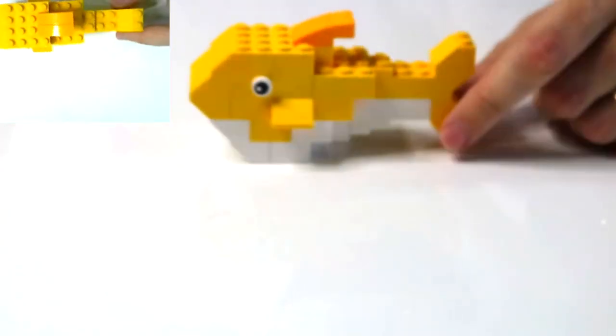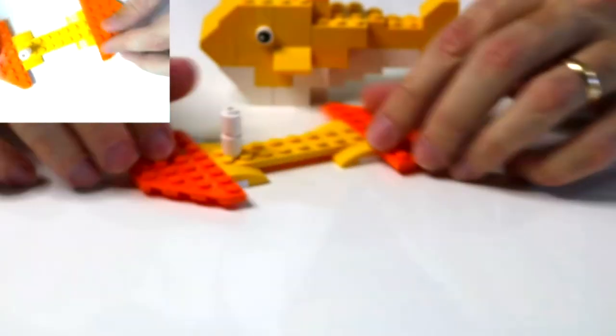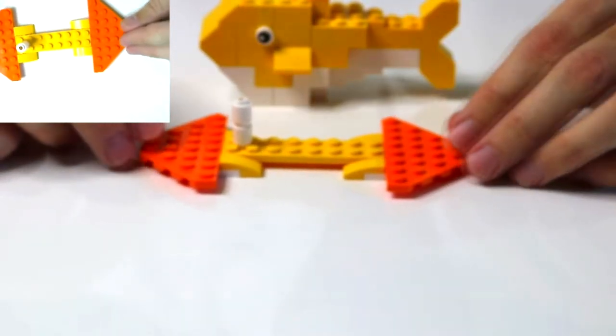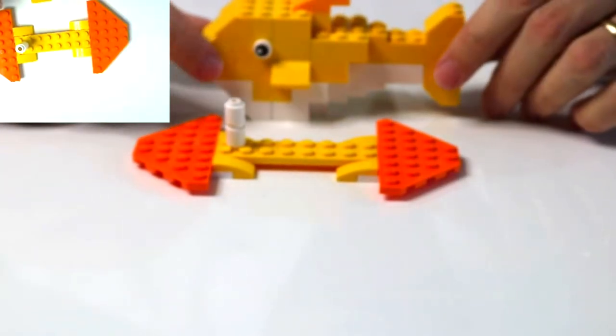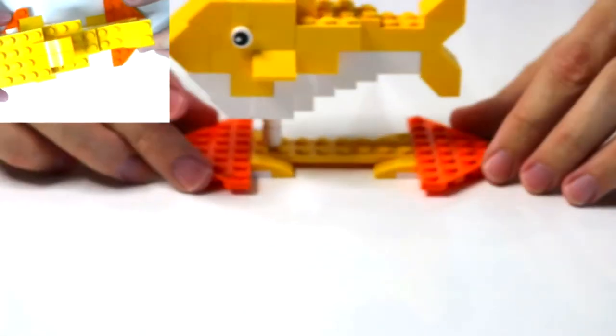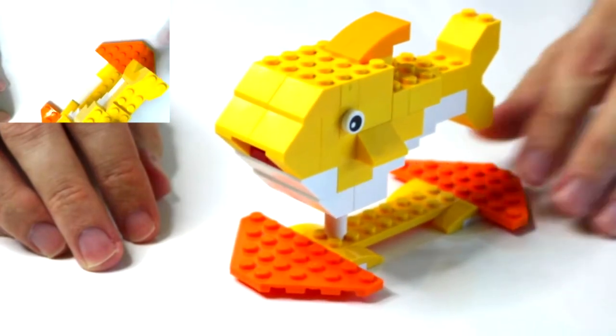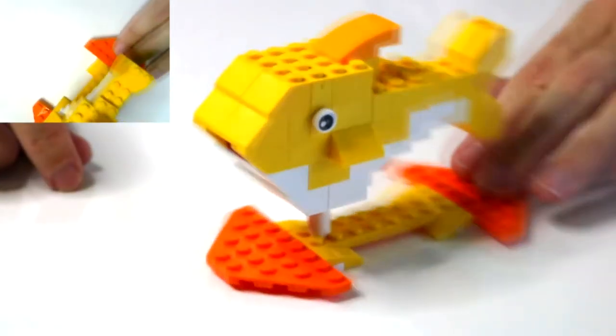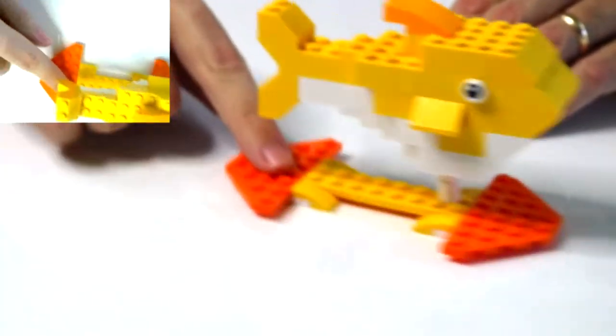That is baby shark. Another thing you can do is you actually can build a little stand for baby shark. This is fairly simple. Use whatever pieces you have. Try to color coordinate with your baby shark. And there you go. There is baby shark on a stand and then you can play with him on the stand and make it look as if you're not touching him and he's swimming through water.